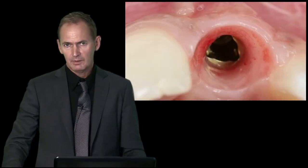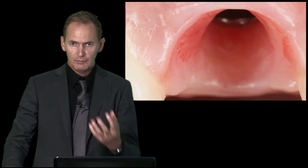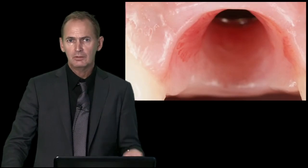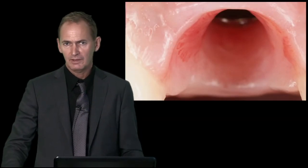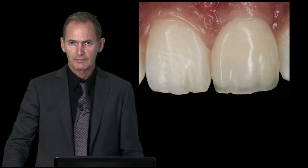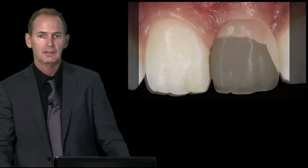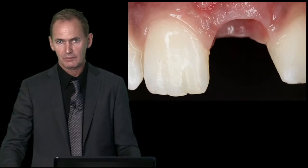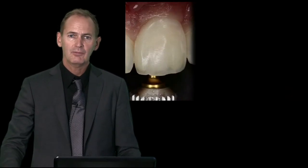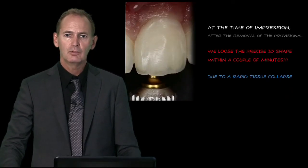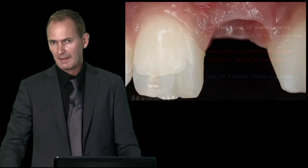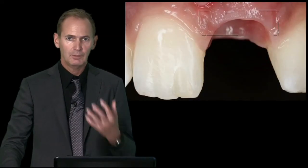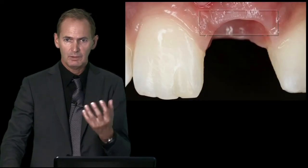Another important statement is that the provisional is essential for shaping a soft tissue emergence. We have to do everything to transfer this emergence to the final restoration, and we have to know how to avoid a collapse of the soft tissue envelope we developed with this provisional — avoiding what you see happening here on this slide.